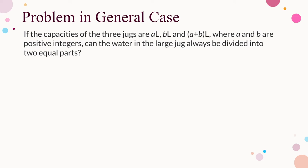The answer is negative. To confirm a statement, a proof is needed; to negate a statement, a counterexample is already enough. So we only need to give an example to show our conjecture. Suppose the capacities of the three jugs are 1 litre, 2 litres, and 3 litres. The volume of water in the large jug is an odd number, so dividing it equally into two parts — getting 1.5 litres — is obviously impossible. It is not always possible to divide the water into two equal parts.